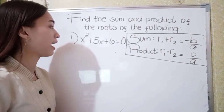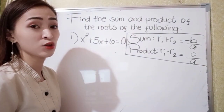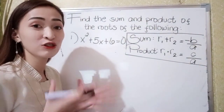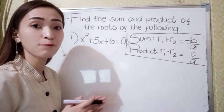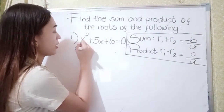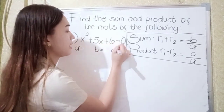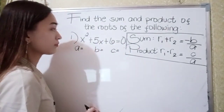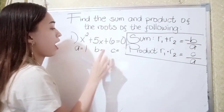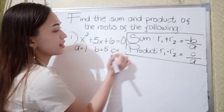For number 1, we have x squared plus 5x plus 6 is equal to 0. First, what we're going to do is identify a, b, and c. So our a here is 1, our b is 5, and c is 6.